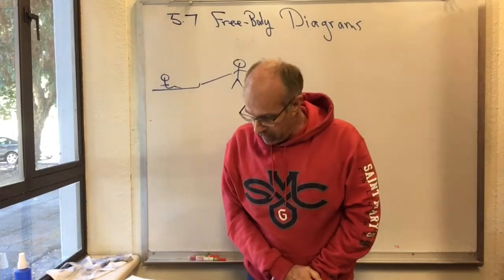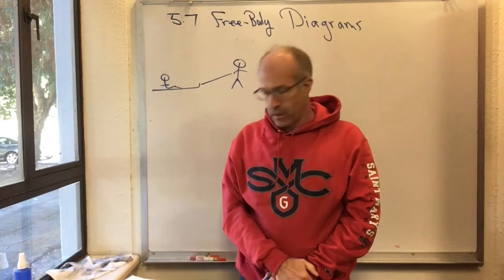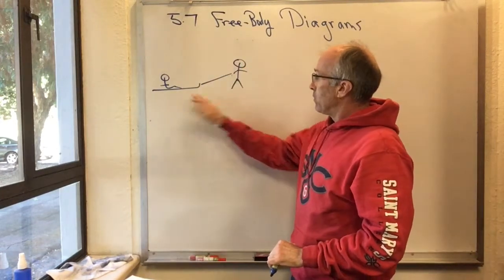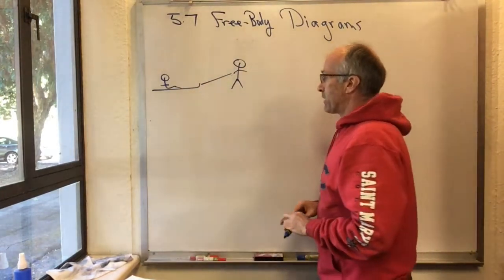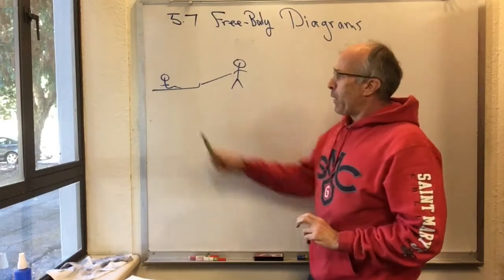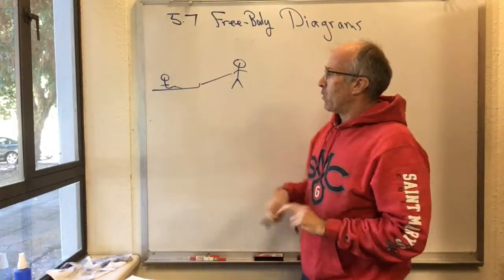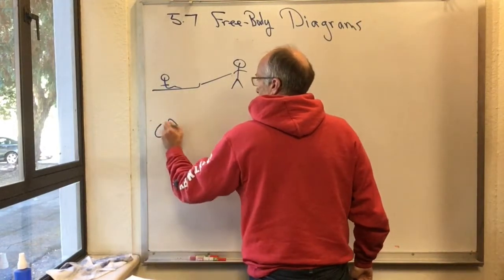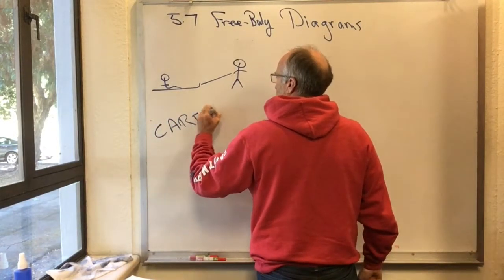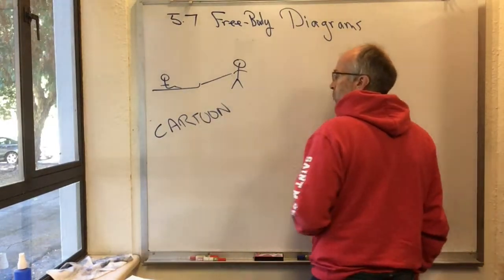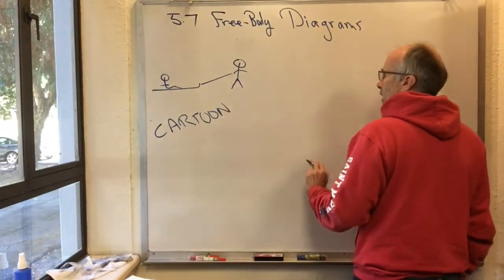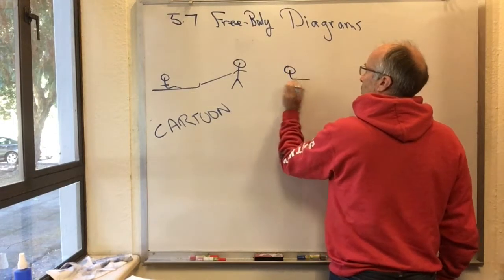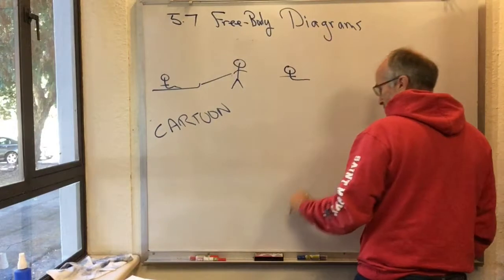This is Knight 5.7 Free Body Diagrams. Here's our parent pulling a child on a sled. I want to be focused on what is happening to the child here. So first I draw this cartoon, capturing as much as I can about the problem. Then Knight encourages us to draw a less complete cartoon that's just got the child.